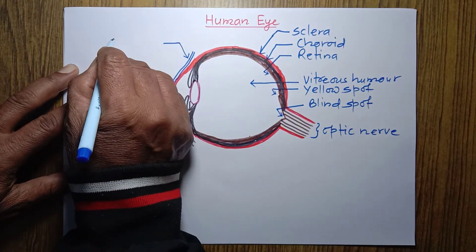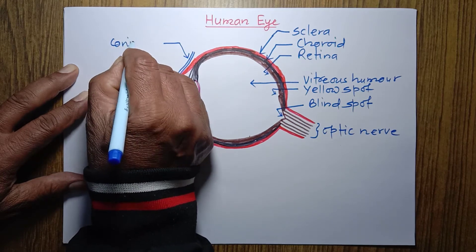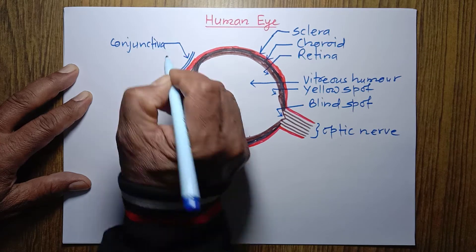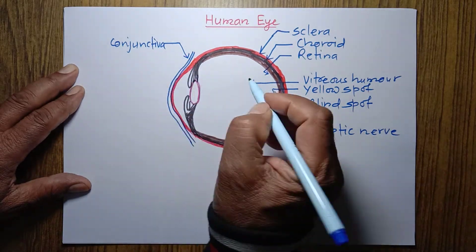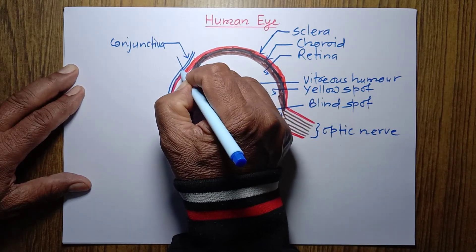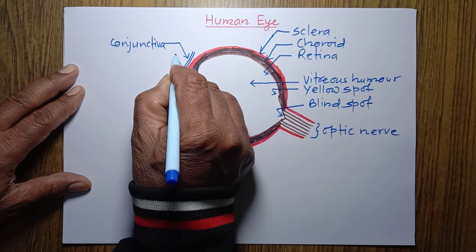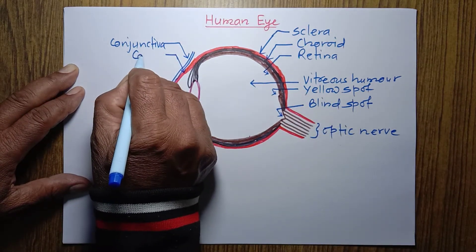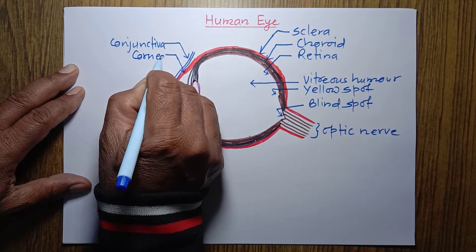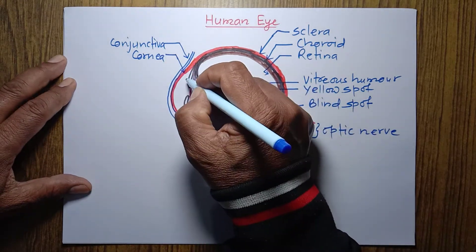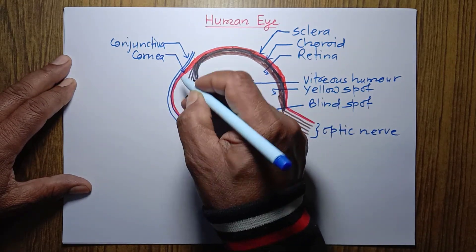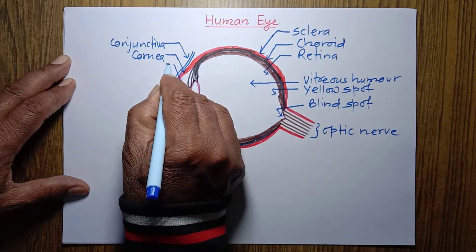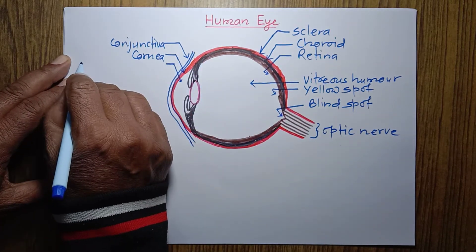This layer shown in red color is cornea. And behind the cornea, there is a little gap which is filled with a watery liquid — aqueous humor.